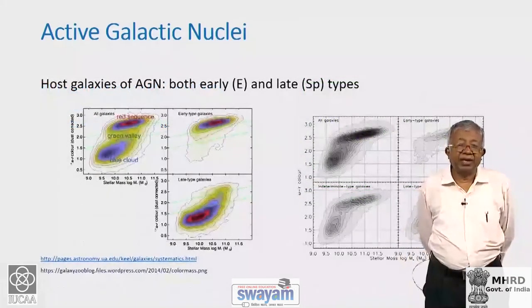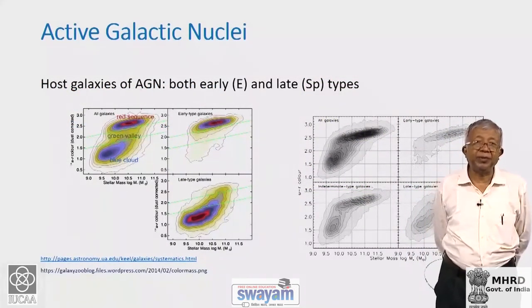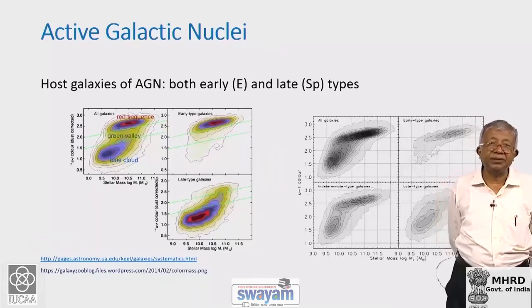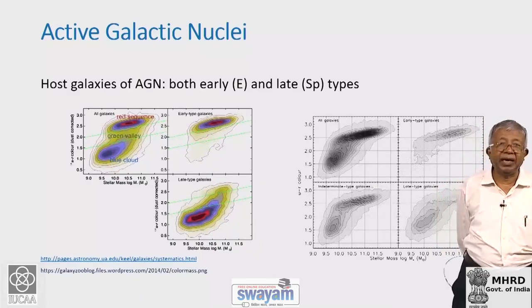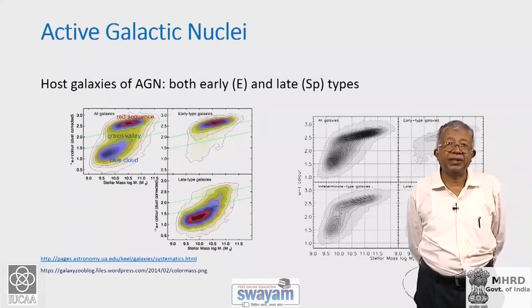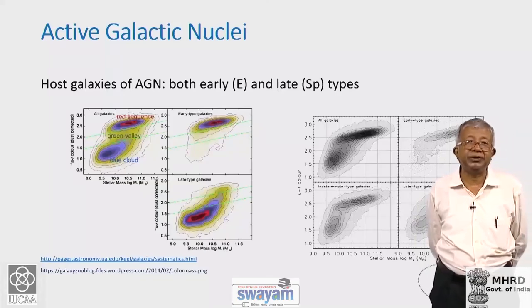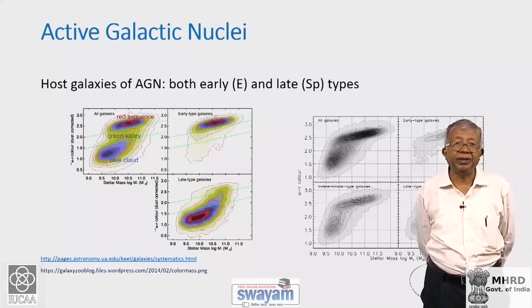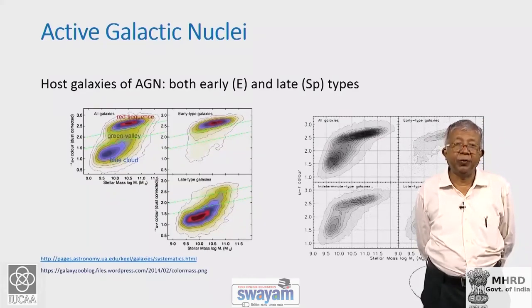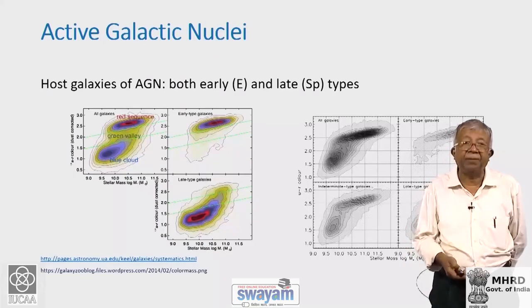BL Lac objects, along with a subset of radio-loud quasars which are optically violently variable, are together known as blazars. They are strongly variable, varying on timescales of days or less, in both total intensity and linear polarization. The images show radio images of the inner nuclear structure of BL Lac object 0735+178, where jets in the nuclear region exhibit all kinds of interesting phenomena. Active galactic nuclei are associated with both elliptical (early type) and spiral (late type) galaxies. The radio-loud ones are usually associated with early type galaxies, whereas the radio-weak types are associated with late type or spiral galaxies.